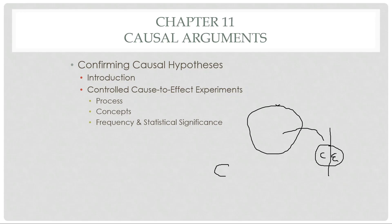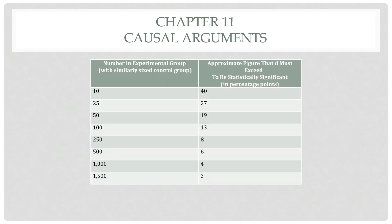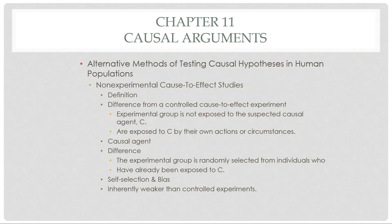The hallmarks of the controlled cause-to-effect experiment are: it's controlled, so you have a control group and an experimental group; you know the cause and you're wondering about the effect. The key distinction is that those conducting the experiment introduce the cause. We also looked briefly at the other method, which occurs in cases where it would be impractical or unethical to engage in an experiment intentionally introducing a cause to see what the effect is.